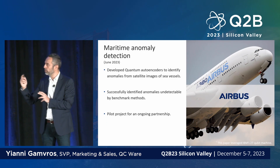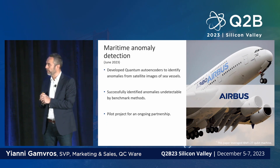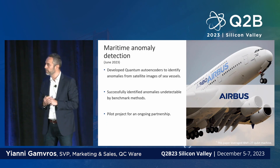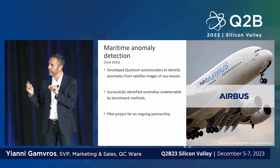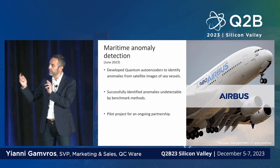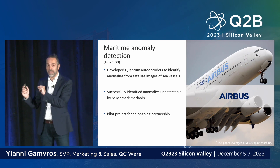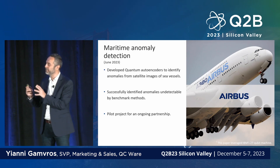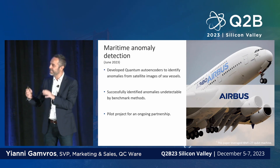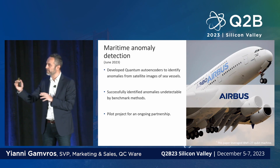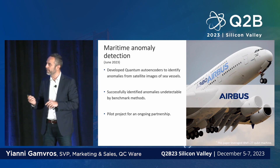In June, we talked about our work with Airbus — maritime anomaly detection, which is a machine learning problem. It's a little unusual that we're doing maritime detection with Airbus, but that's what they wanted to focus on. This is part of an ongoing collaboration; we haven't published a paper yet but the teams are still working together.